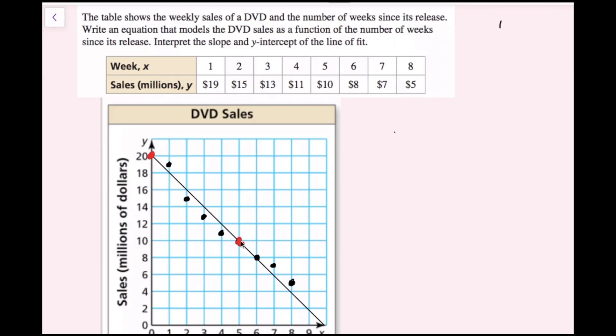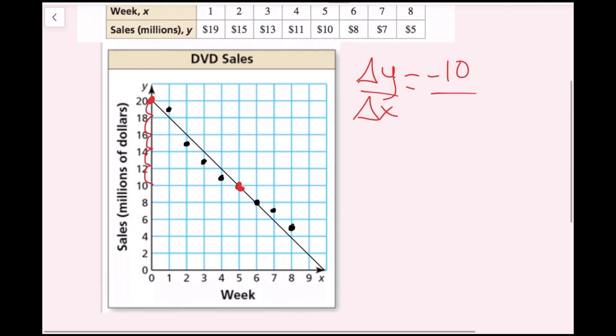The first thing I need to do is find the slope and I can do that from the graph. If I start here and go here, I'm going down 2, 4, 6, 8, and 10. My change in y is negative 10 and my change in x is 1, 2, 3, 4, 5. Negative 10 over 5 is the same as negative 2.